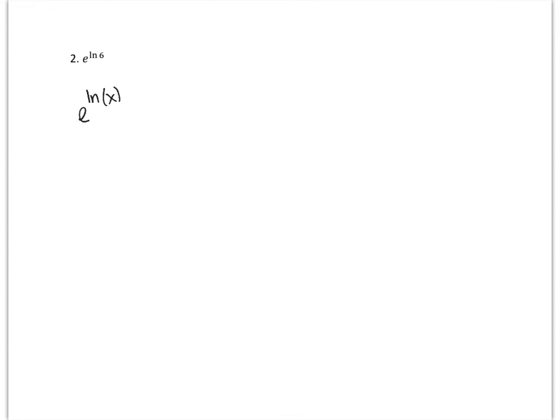Similarly, in this problem we have e to the natural log of 6. Again, what we're being asked to remember is that whenever we have e to the natural log of x, that is again just x. So in this case, e to the natural log of 6 is just 6.